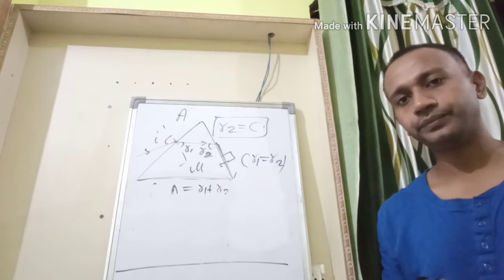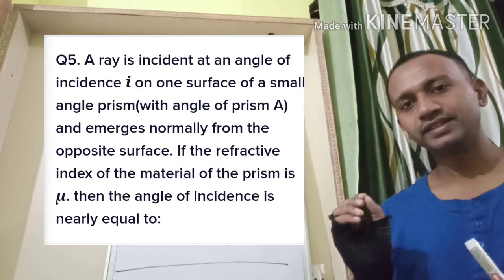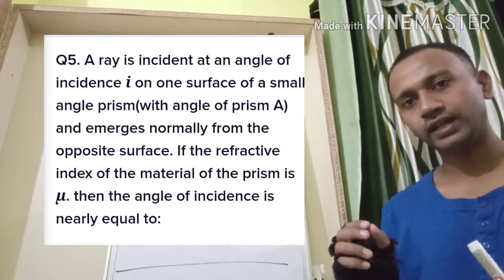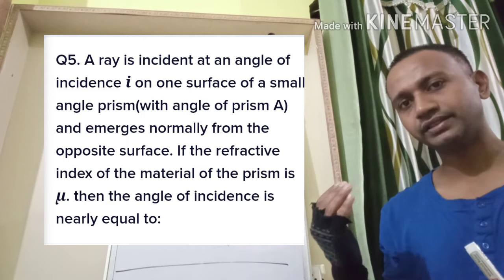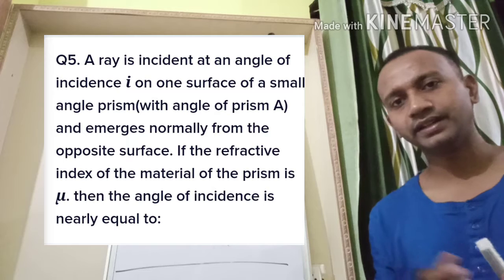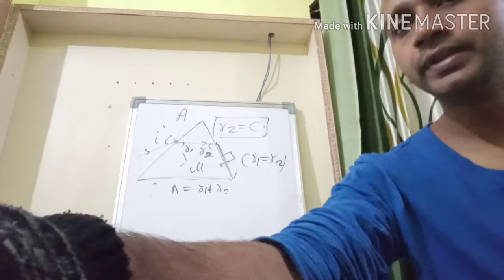This is a JEE 2020 question. In the figure, a ray is incident at angle i. We want to calculate this angle i for which when the ray comes out of the other end of the face it suffers TIR. It has been given that capital A is the angle of the prism and μ is the refractive index of the glass prism.